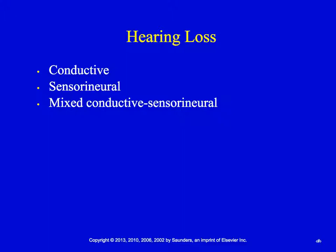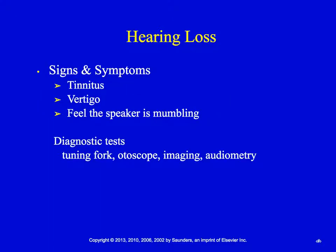It's important to understand that there are different causes of hearing loss so they can be treated appropriately — you have to identify what kind it is. Signs and symptoms include tinnitus, vertigo, and difficulty hearing, with patients feeling that people are mumbling. Presbycusis is sensorineural hearing loss that occurs as a result of aging — it happens normally as we age, just like changes in sight. There are hearing aids and many other options to help patients with hearing loss.